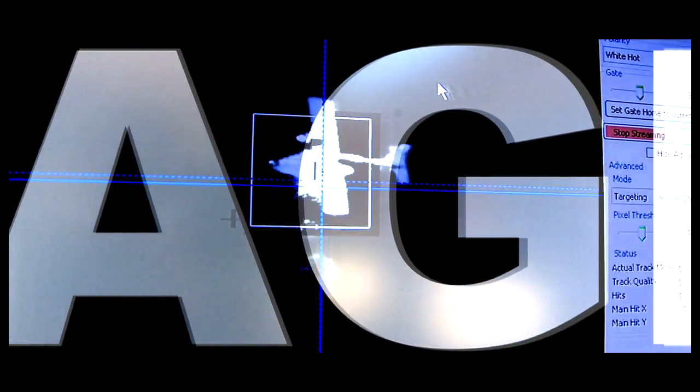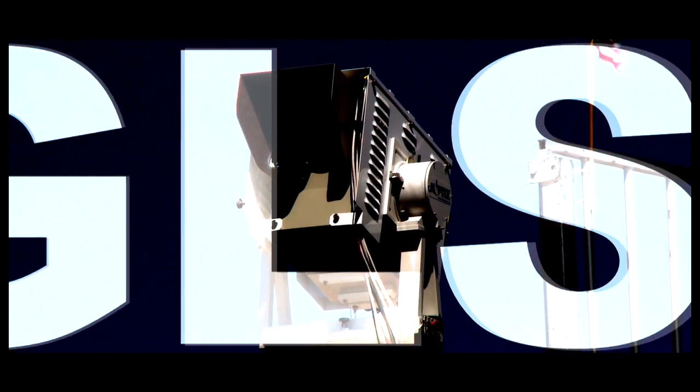Hollister Airport, automated weather observation 1825 Zulu weather. Wind calm, visibility more than 10, sky condition clear below 12,000 feet.